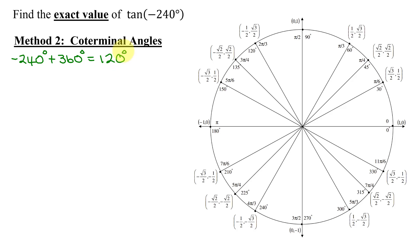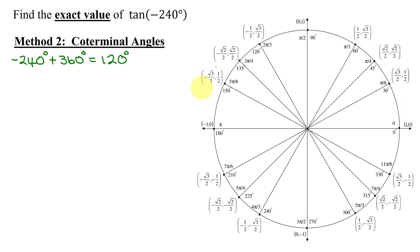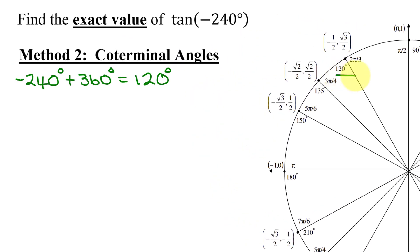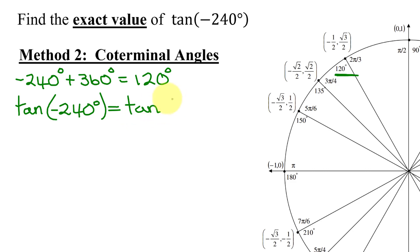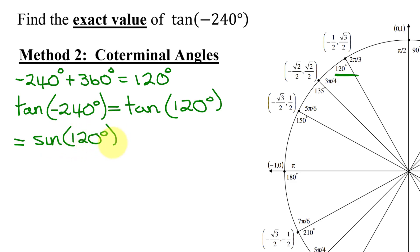Now, is 120 degrees on the unit circle? The tangent of negative 240 degrees equals the tangent of its coterminal angle, which is 120 degrees. We're going to rewrite that in terms of sines and cosines, so it's the sine of 120 degrees divided by the cosine of 120 degrees.